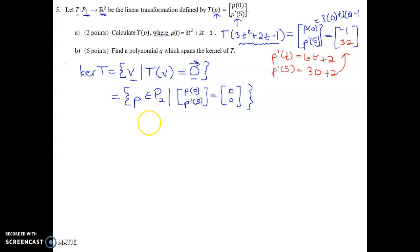So if a polynomial is in the kernel of this transformation, then P of 0 must equal 0 and P prime of 5 must equal 0, so that both entries are 0.